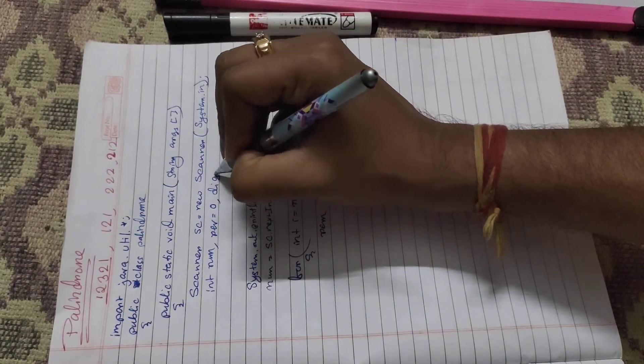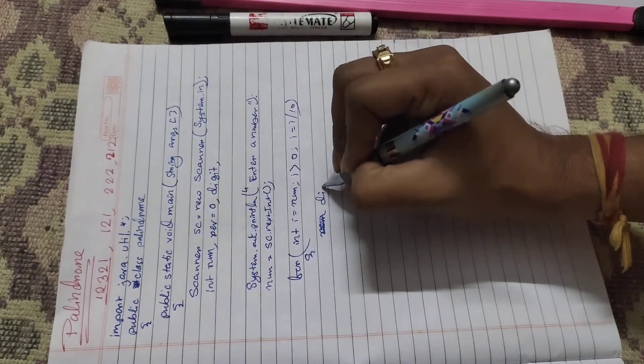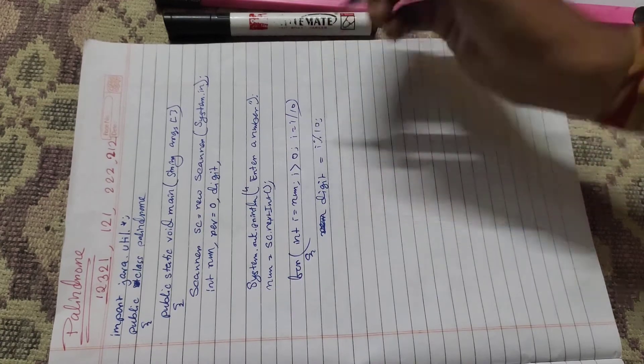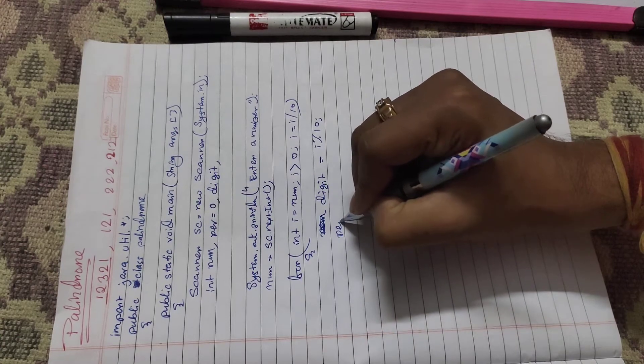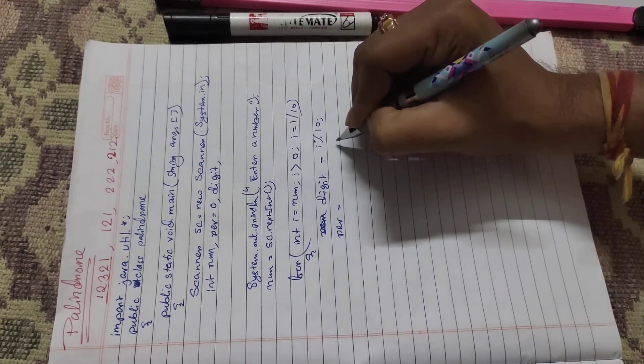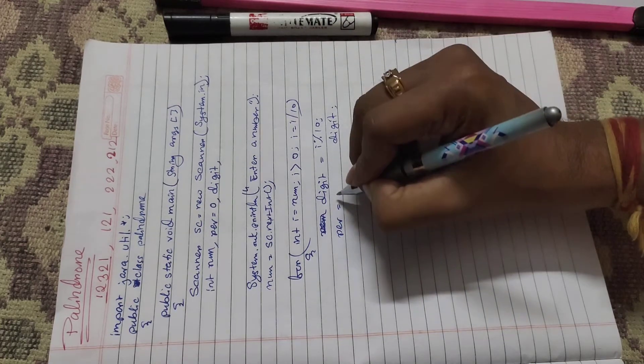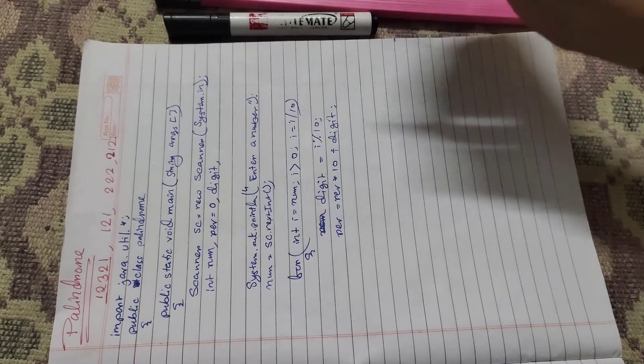So here we use a variable digit. Digit equals i mod 10. Then we have to store the digit into rev, so we write rev equals rev into 10 plus digit, and close it.